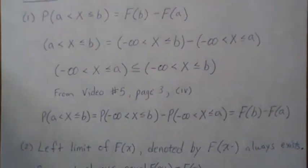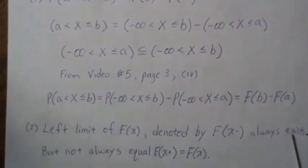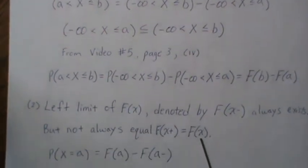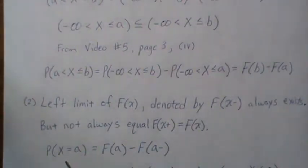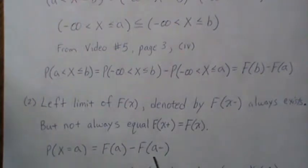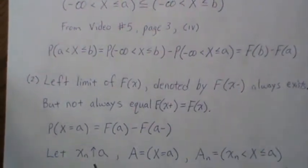The left limit of our CDF, denoted F of x minus, always exists, but it doesn't have to equal the right limit, which we said equals F of x. The probability of the event {X = A} can be expressed as F of A minus the left limit F of A minus, and we will show that.